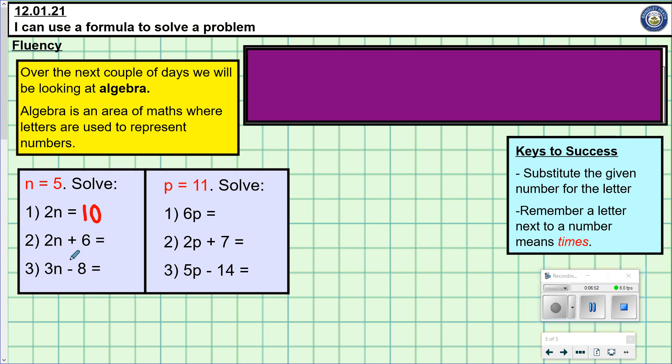Next question, slightly trickier. It says 2n plus 6. So, it's wanting to know 2 lots of 5 and 6. Well, n is 5. 2 lots of 5 is 10. And 6 gives me 16. Question 3. It says 3n. So, it's asking 3 lots of n. Again, n equals 5. So, 3 lots of 5 is 15. Take away 8. And give you the answer 7.